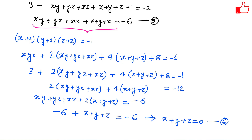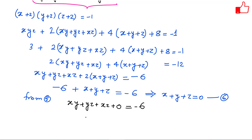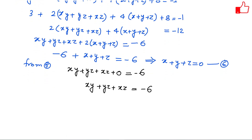From equation 5, plugging x + y + z = 0: xy + yz + xz + 0 = -6. So xy + yz + xz = -6. Now we have to find the value of (a+20)(b+20)(c+20).